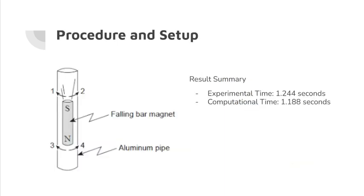For this experiment, I dropped a magnet through a tube of aluminum foil and recorded the time for each drop, then found the average total time for each drop. The experimental and computational results are shown on the right-hand side, and the two values are relatively close to one another.